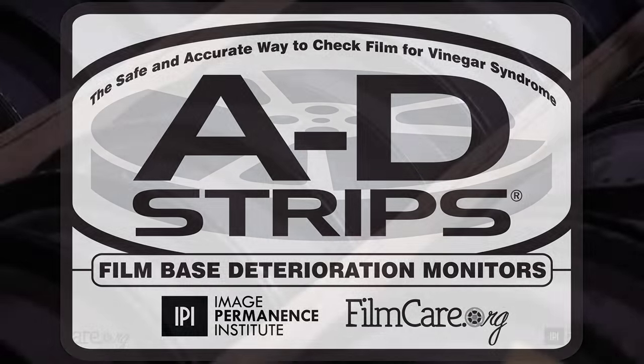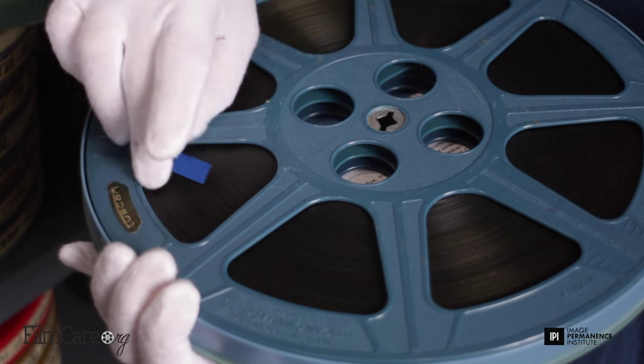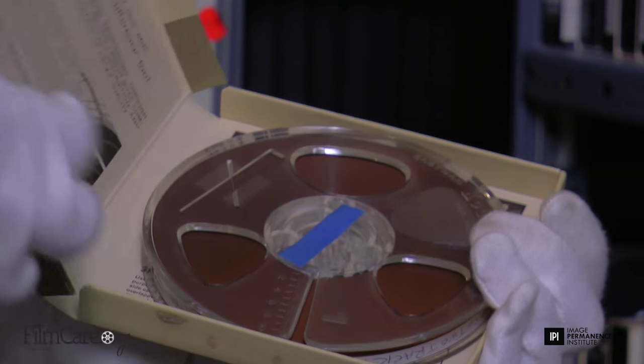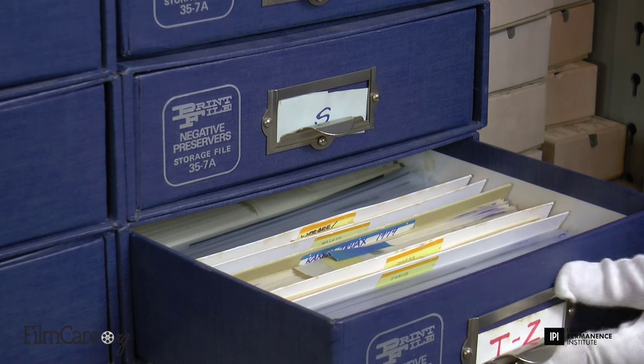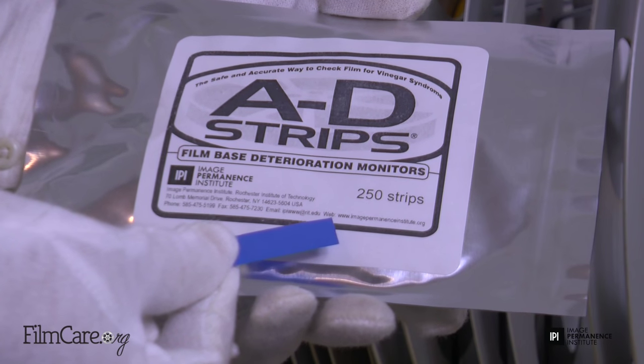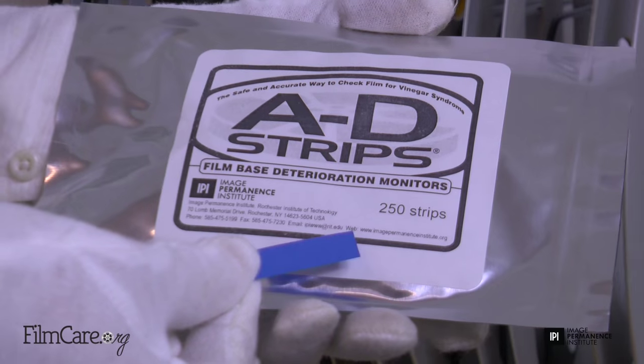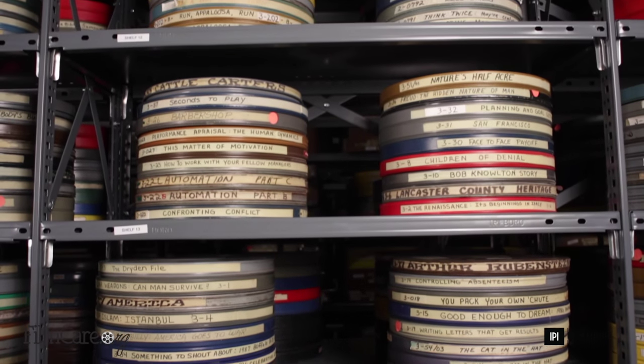This is a demonstration of how to use AD strips to test for deterioration in acetate-based film collections. AD strips can detect the first signs of decay through critical deterioration. AD strips are dye-coated paper strips that detect and measure the severity of acetate film deterioration, also known as vinegar syndrome, in film collections.